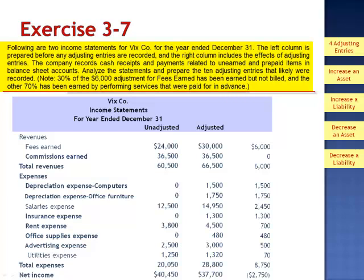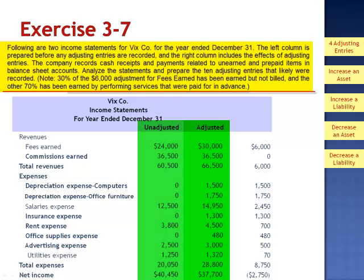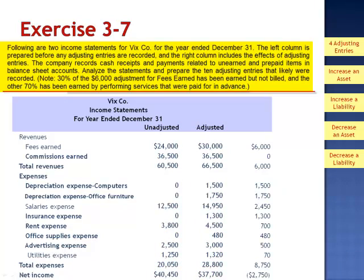Exercise 7. Following are two income statements for VIX company for the year ended December 31st. The left-hand column is prepared before any adjusting entries are recorded, and the right column includes the effects of adjusting entries. The company records cash receipts and payments related to unearned and prepaid items in balance sheet accounts. Analyze the statements and prepare the 10 adjusting entries that likely were recorded. Note that 30% of the $6,000 adjustment for fees earned has been earned but not billed, and the other 70% has been earned by performing services that were paid for in advance.